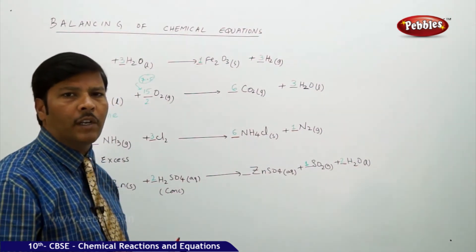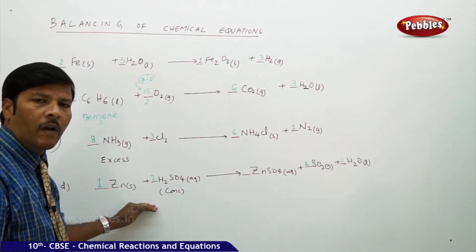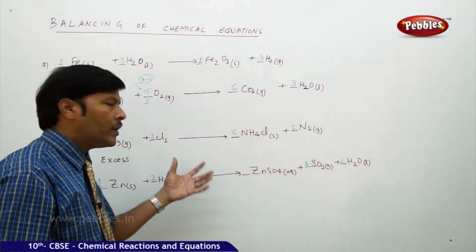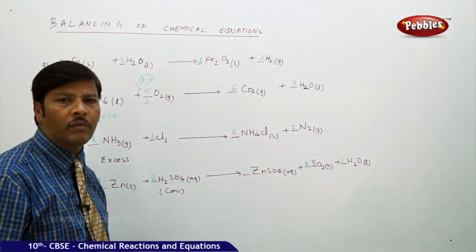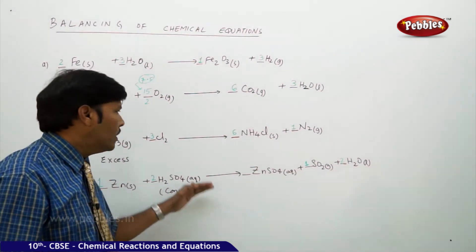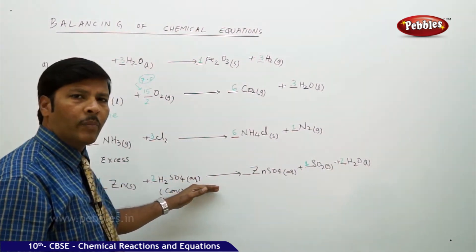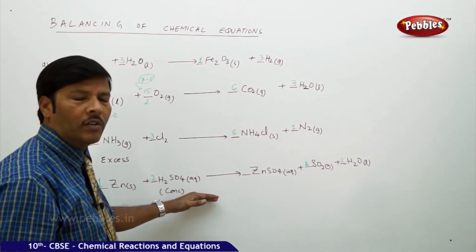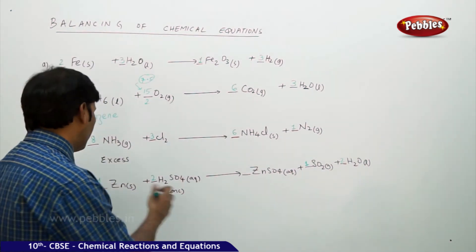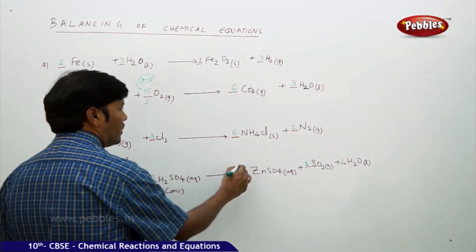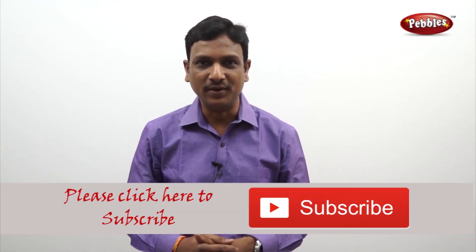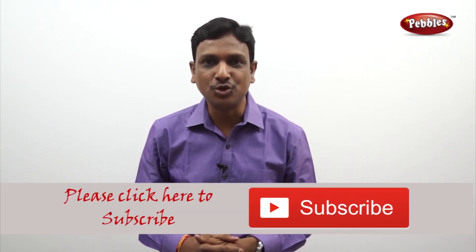We can easily balance given chemical equations by using a little bit of common sense, awareness of the groups involved in the reaction, and a little bit of practice. When balancing chemical equations, there is no need to use any particular method — it is always better to use the hit and trial method and maintain time management. Since zinc is only 1 mole here, mark 1 and the entire reaction is balanced.